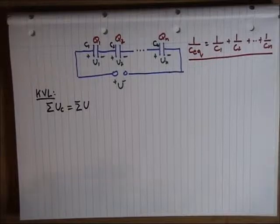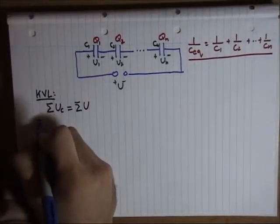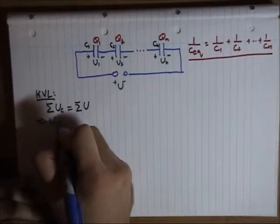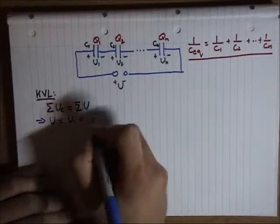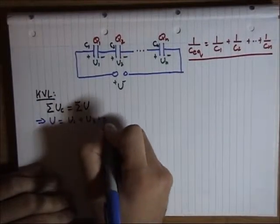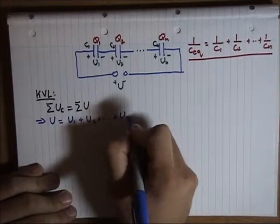Again, we have only one source. So, U is equal to U1 plus U2 plus UN.